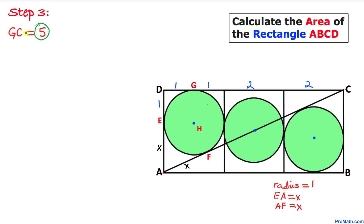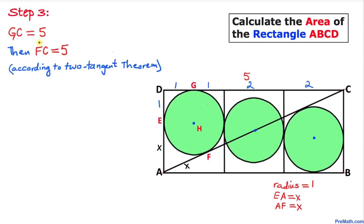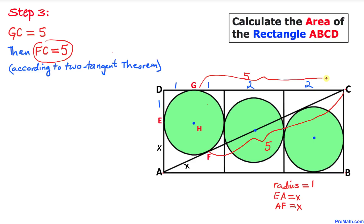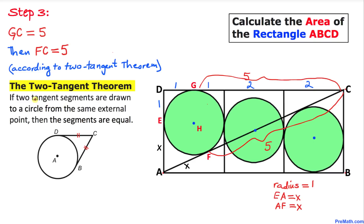Moreover, the length of line segment GC — from G to C — is 1 plus 2 plus 2, which is going to be five. Then the line segment FC is going to be five as well according to the two tangent theorem, meaning FC is also five units because they are equal in length.